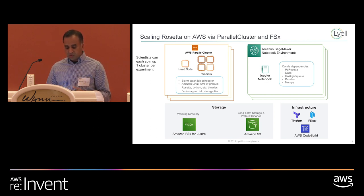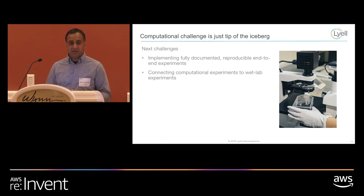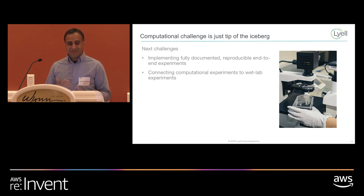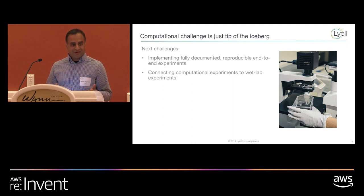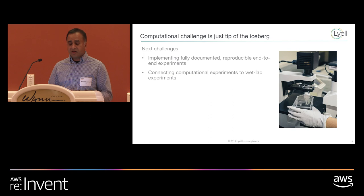Ultimately, the computational scaling has been fantastic and Parallel Cluster has been pretty low effort to get up and running quickly, giving scientists an environment where they don't have to think much about the underlying computational infrastructure. But where we're going from here is making sure that computations are fully reproducible and fully documented. As we think about FDA submissions down the line, we need everything to be traceable. We're also working on tying these computational experiments to what is actually going on in the lab, so we can have a fully traceable end-to-end data lineage for our data.